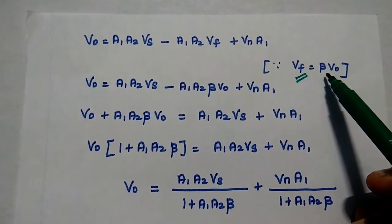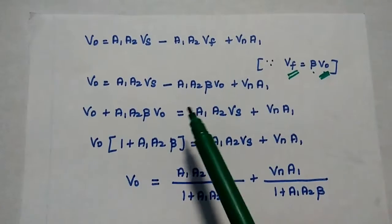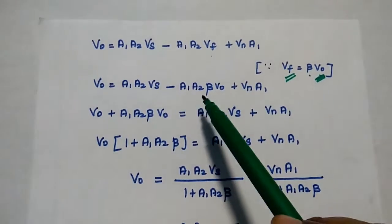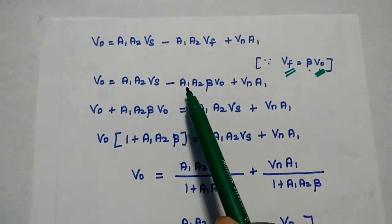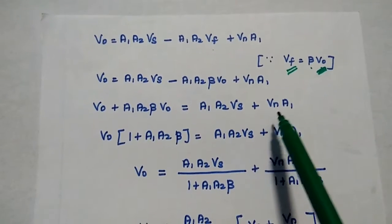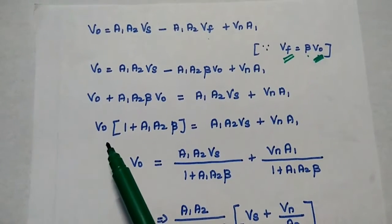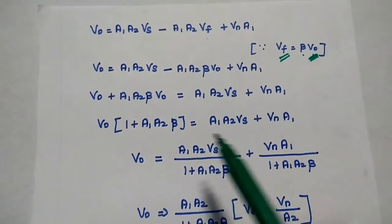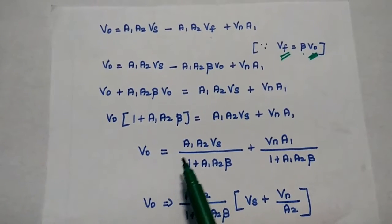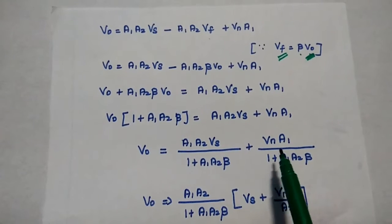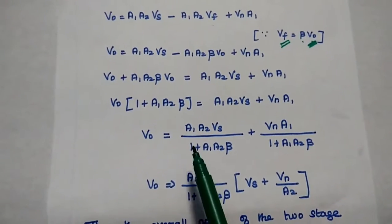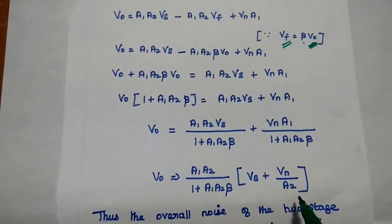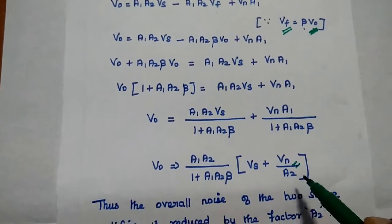Since the feedback signal Vf equals beta·V0, we substitute and rearrange: V0·(1 plus A1·A2·beta) equals A1·A2·Vs plus Vn·A1. Moving terms to the right-hand side gives V0 equals A1·A2·Vs divided by (1 plus A1·A2·beta) plus Vn·A1 divided by (1 plus A1·A2·beta). Taking A1·A2/(1 plus A1·A2·beta) as a common factor, we get V0 proportional to Vs plus Vn/A2. The noise signal is thus reduced by the factor A2, the gain of the additional amplifier.